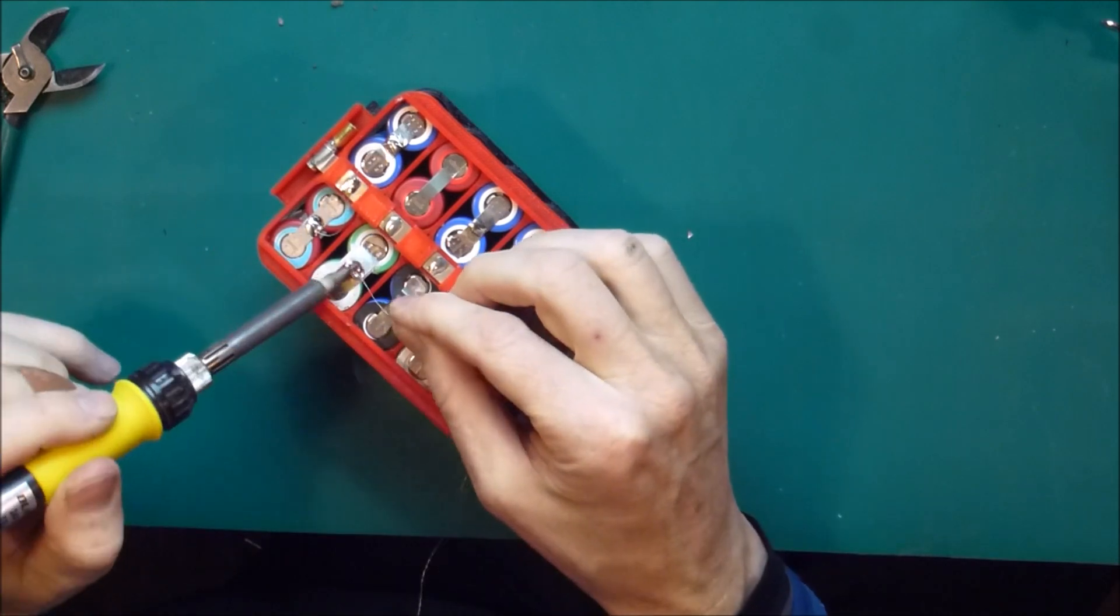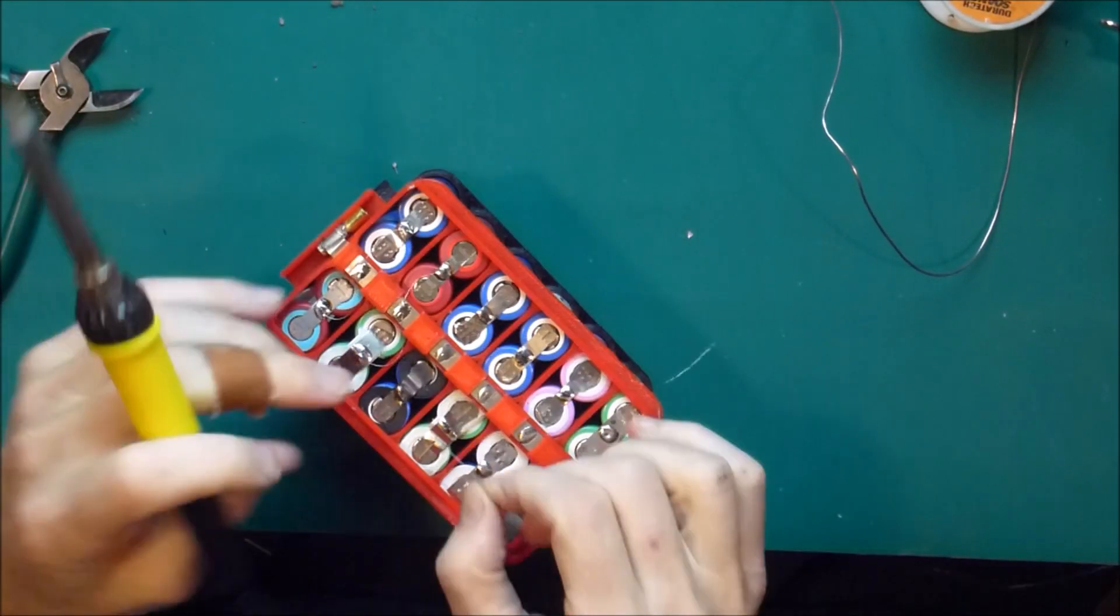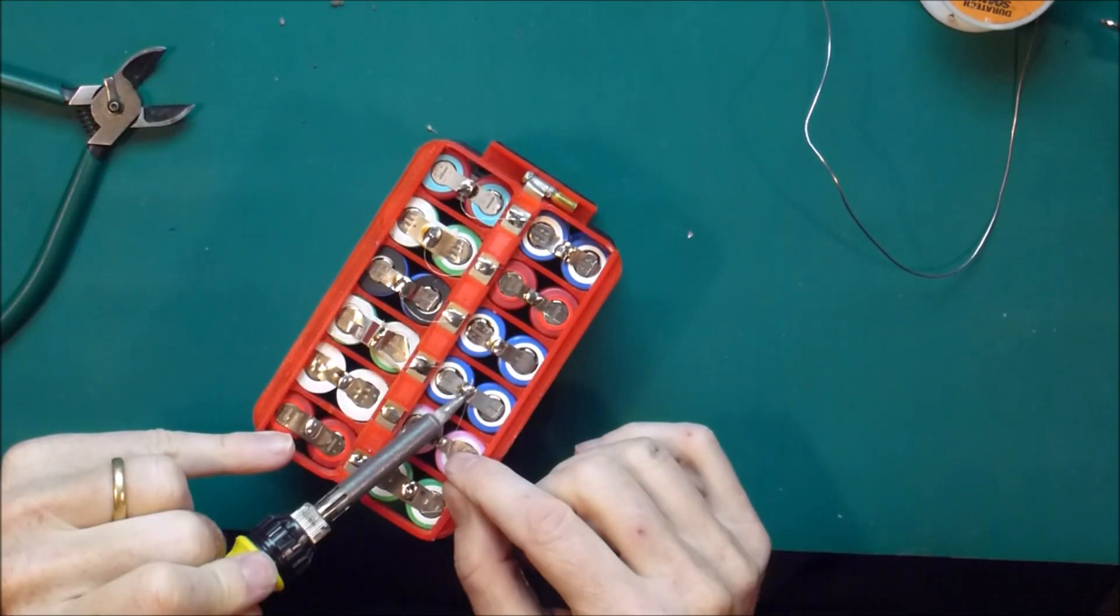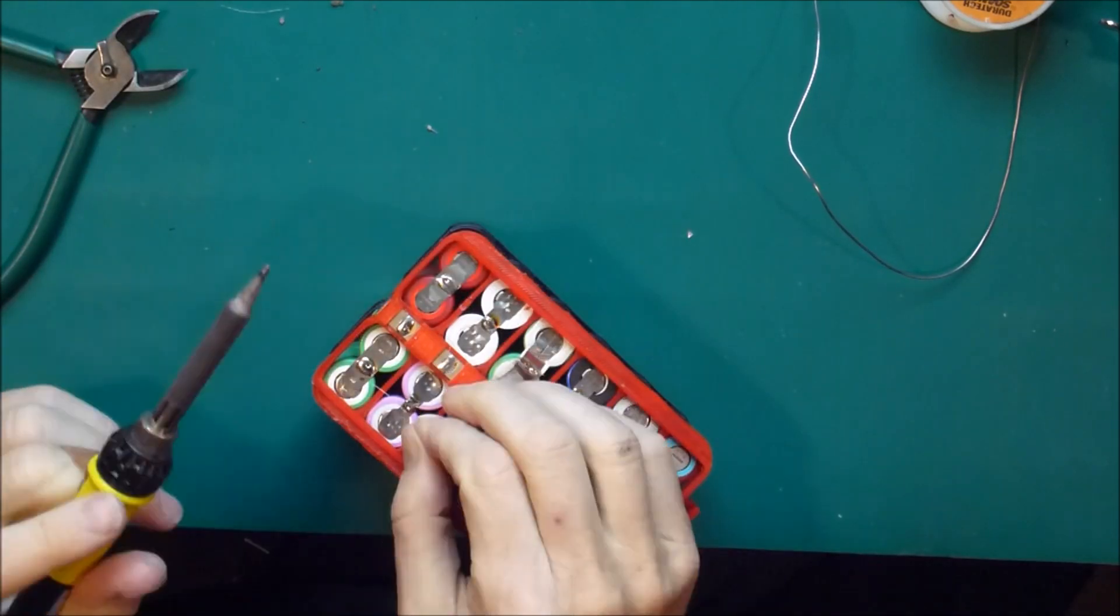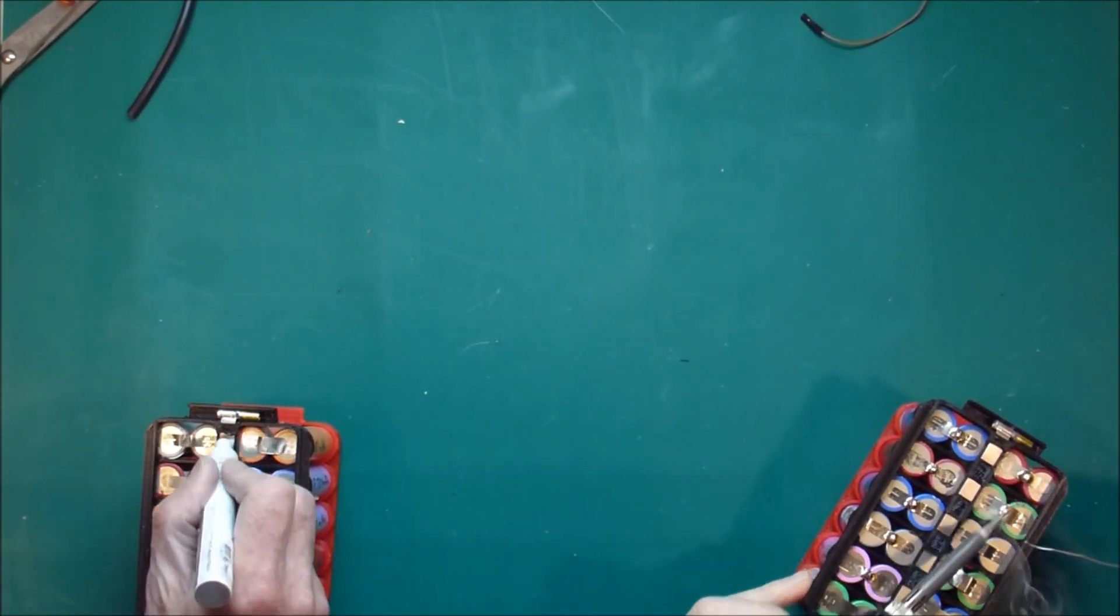This is the same 0.2mm diameter fuse that I used for the power shelf a few episodes earlier. It's just some wire that I stripped out of something I had in the junk pile and it turns out to be the right diameter to produce a 5A fuse.